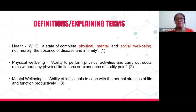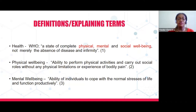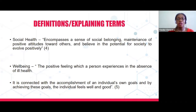By way of defining terms, we'll start with health. The World Health Organization has defined health as a state of complete physical, mental, and social well-being, and not merely the absence of disease or infirmity. Physical well-being is the ability to perform physical activities and carry out social roles without physical limitations or bodily pain. Mental well-being is the ability of individuals to cope with normal stresses of life and function productively.